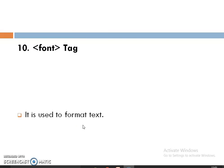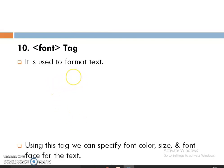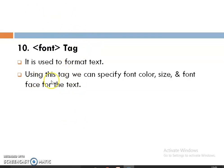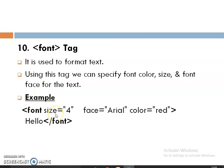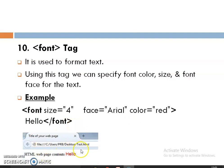The Font tag is used for formatting the text. With this tag, we can specify the font color, different font sizes, and different font faces — that means font styles. For example, passing size equal to 4, font face as Arial, color, and the text 'Hello'. The output will display 'Hello' in red color, with font face Arial and size 4.